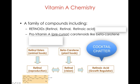What you have here below is what we'll refer to as cocktail chatter. What I'm simply showing you is that we have the animal form of vitamin A and the plant form of vitamin A, ultimately forming the different retinol, retinal, and retinoic acid. They need to be in these forms before they can perform their functions in the body.